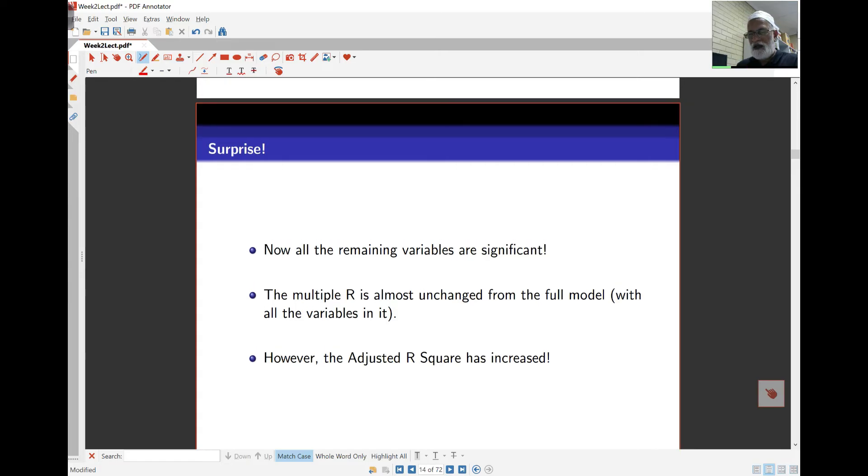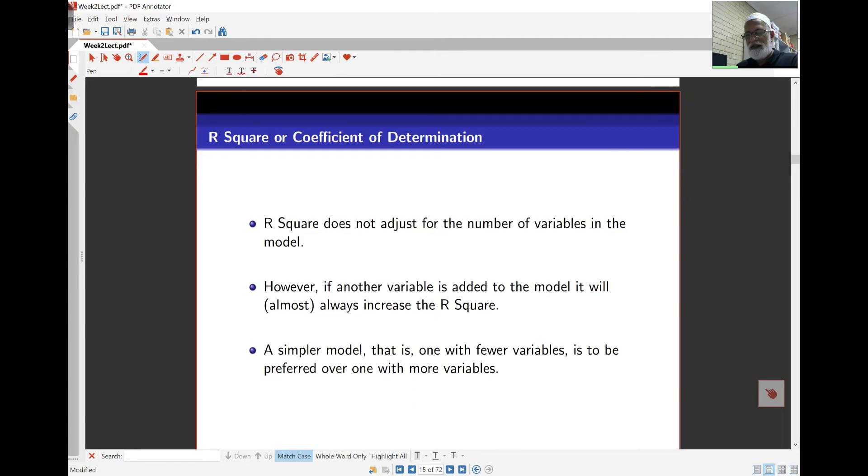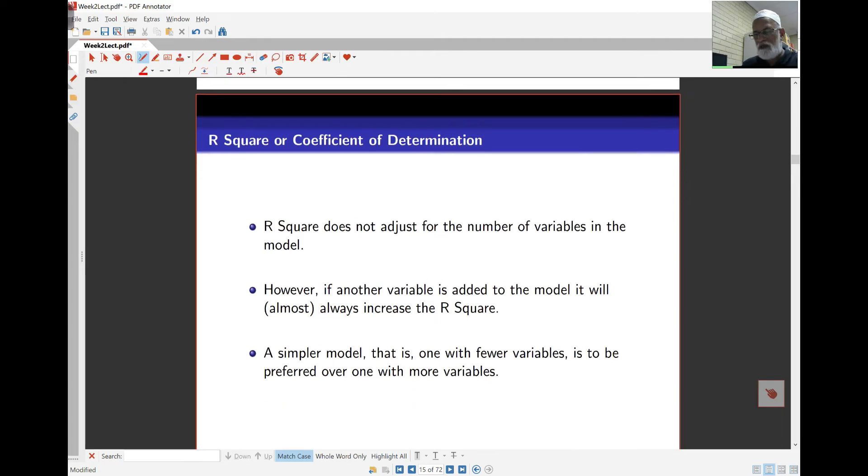Now, what we find is that the multiple R is almost unchanged. If you compare them with the previous model, nothing was different there. The adjusted R square has increased. And that's a good thing to happen, because the adjusted R square adjusts for the number of variables in the model. So the previous model had one extra variable.